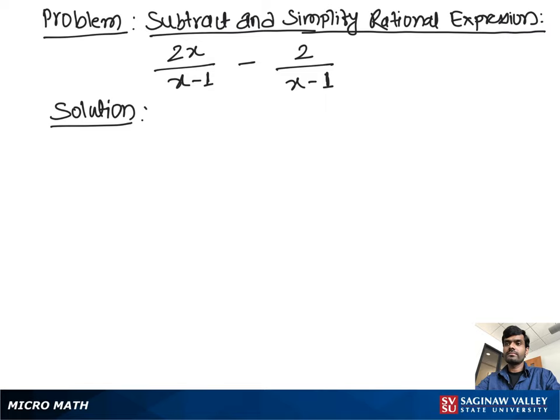Subtract and simplify rational expression: 2x over x minus 1 minus 2 over x minus 1. Now how to solve this problem? Let's write the problem one more time: 2x over x minus 1 minus 2 over x minus 1.